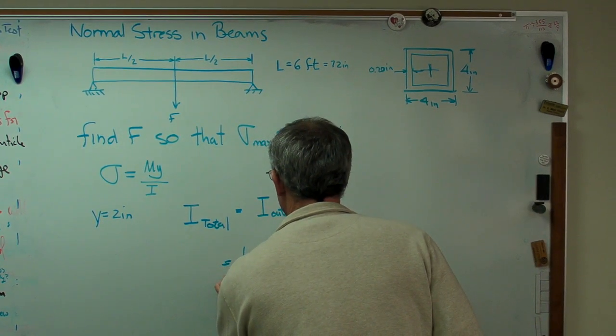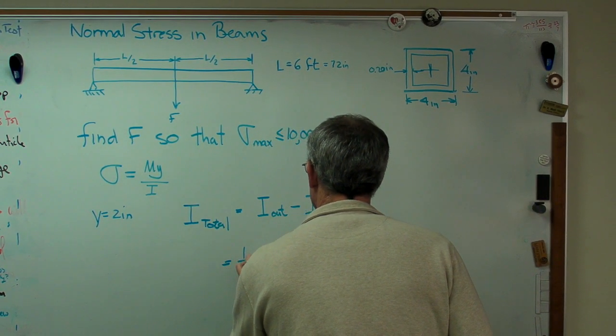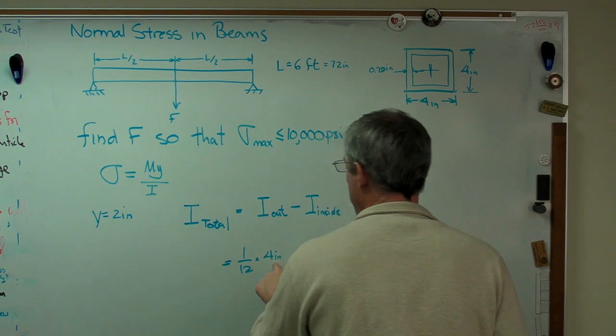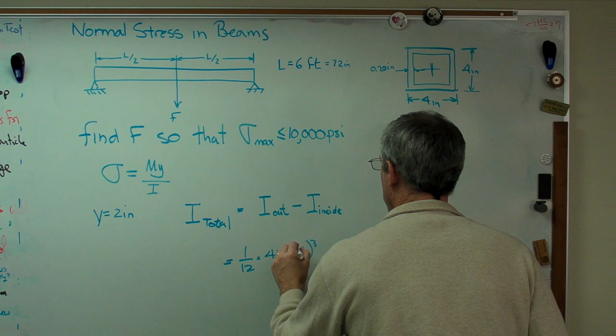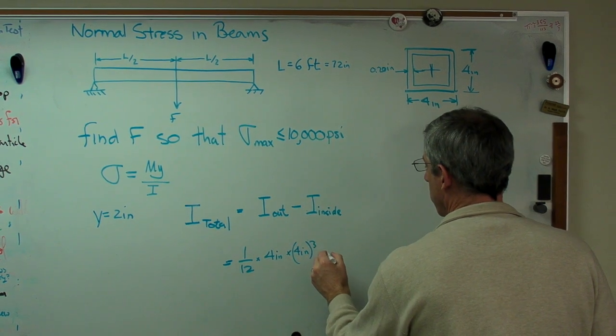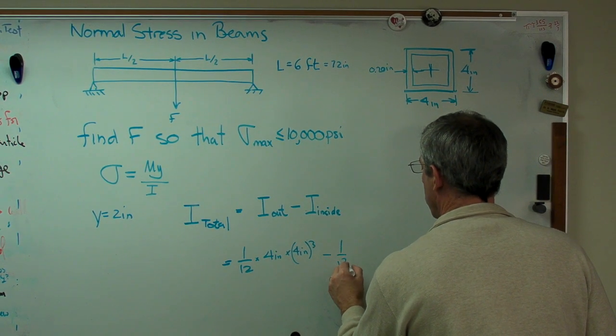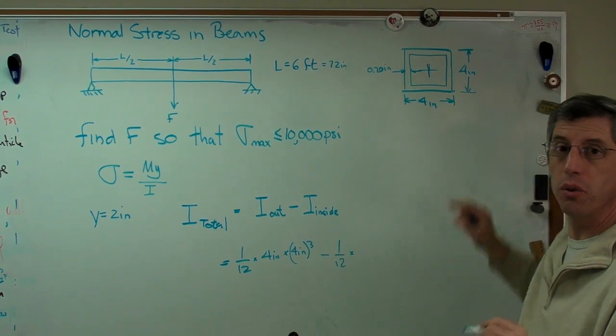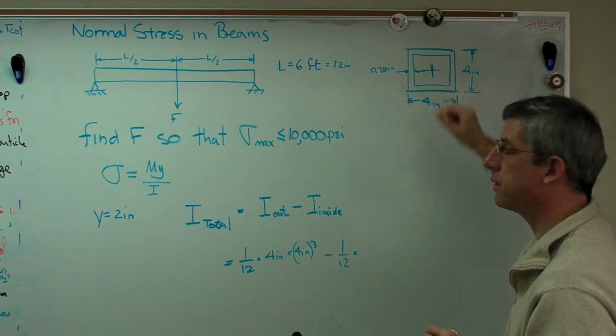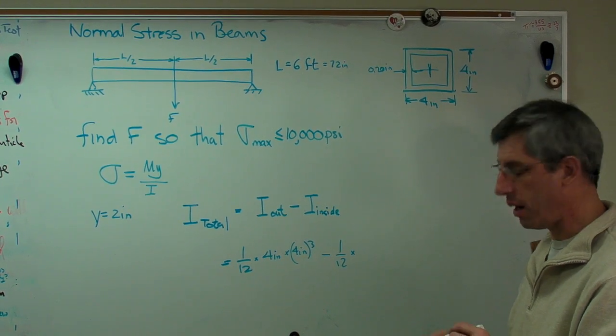Okay, think of this as a positive area, and that is a negative area. So, 1/12th times 4 inches, which is the base, times 4 inches cubed. That's the height, minus 1/12th times. Now, hang on a second here.